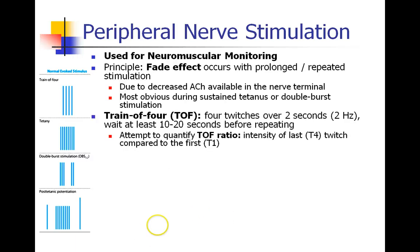The technique you're most familiar with is probably a train of four — four twitches given over two seconds, which is two twitches per second, or two hertz. It can be done every roughly 10 to 20 seconds, and you shouldn't do it more frequently than that, as we'll see in just a few moments.